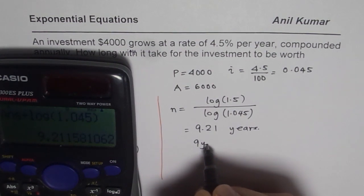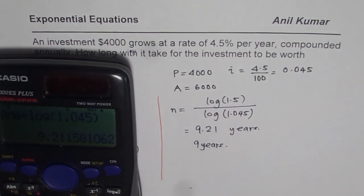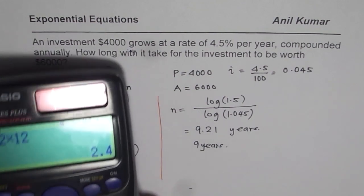So it is 9 years and how many months? In one year you have 12 months. So when you say 0.2 it equals 0.2 times 12, which gives you two and a half months.